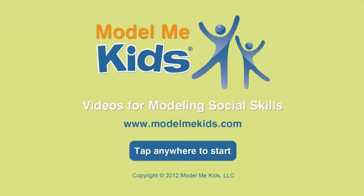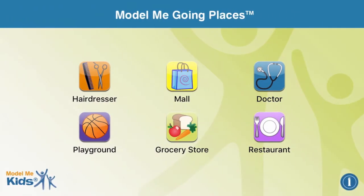To begin using the app, you touch anywhere on the screen to get to the homepage. It lists six different places to choose from: hairdresser, mall, doctor, playground, grocery store, and restaurants.